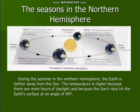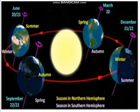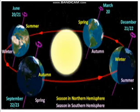Now you understand how the seasons in the northern hemisphere occur. Looking at the picture: summer is in June 21st, winter is in December, and autumn and spring occur in between. The earth continuously revolves around the sun, producing these seasons in the northern hemisphere.